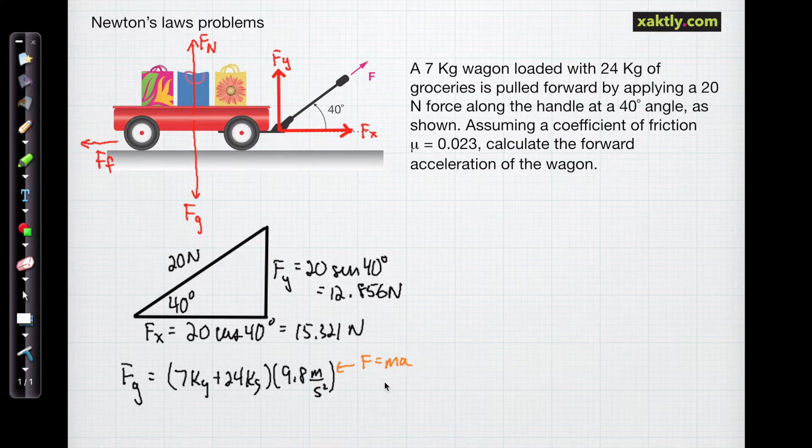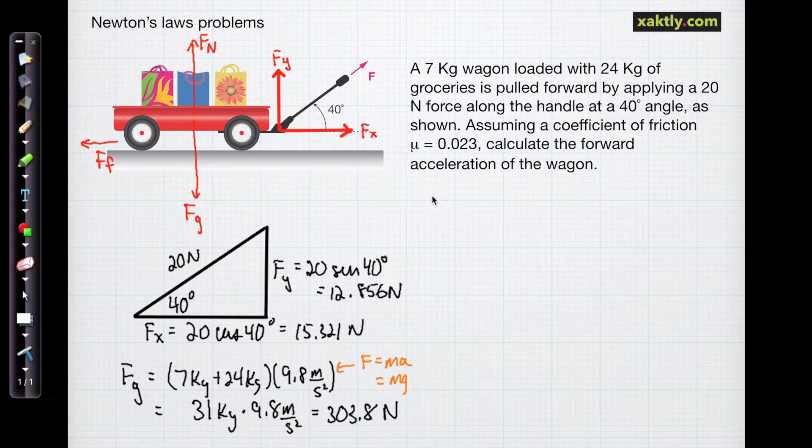The result of that is going to be 31 kilograms times our acceleration, 9.8 meters per second squared. Our units are going to be in newtons, kilogram meters per second squared, and the resulting force is 303.8 newtons in the downward direction.